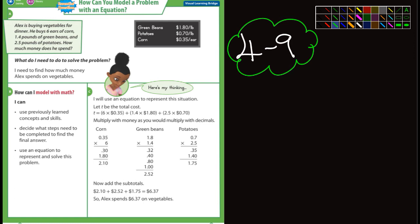So it's talking about modeling problems with an equation. You're just going to have to read these word problems and try to figure them out. Let's look at the first example they give us here. It says Alex is buying vegetables, and he buys six ears of corn, 1.4 pounds of green beans, and 2.5 pounds of potatoes. How much money did he spend? You got to check the price of each one.